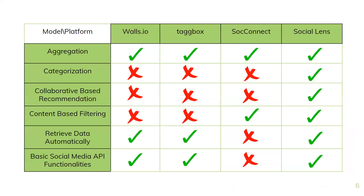When looking at other social media aggregators, we found a trend with products such as Walls.io and Tagbox, which are helpful for managing social brands — you can aggregate your social data and perform basic social media functionalities, but there's no personal experience or filtering. We also found a product called SubConnect which attempts to solve the same issue but lacks many features: no personalized recommendations, no basic social media functionalities, and you have to manually group the data. That's where Social Lens excels.